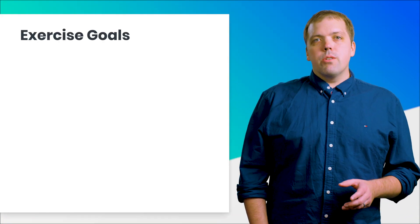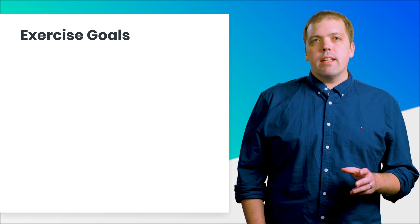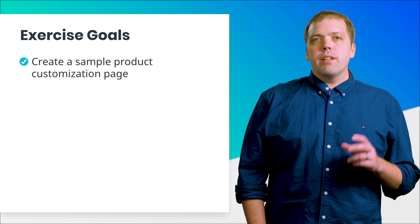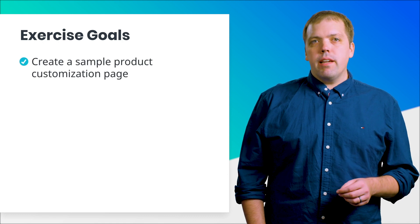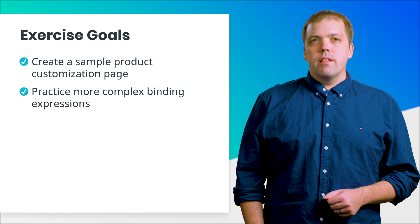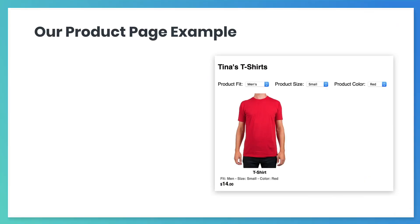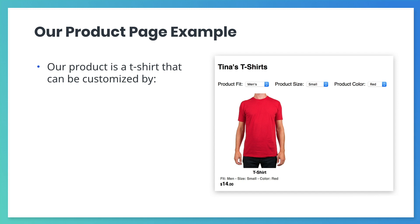In this next exercise, we'll create a basic e-commerce product page like the one in our case study. We're going to create a sample product customization page, practice complex binding expressions, and experiment with initial state variables. Our product is a shirt that can be customized by fit — men's or women's — size: small, medium, or large, and color: red, green, or blue.